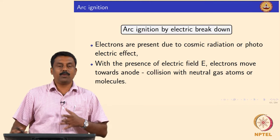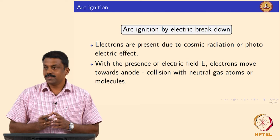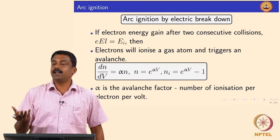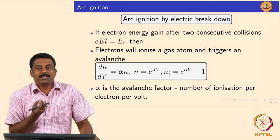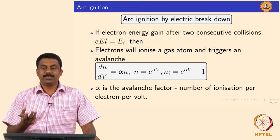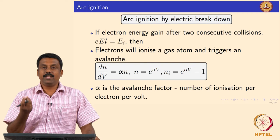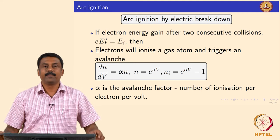Upon repeated collision with gas atoms, the moment they gain a critical energy equal to the ionization energy of the gas, they trigger ionization. The energy gained by an electron is e·E·L, where e is the charge of an electron, E is the applied electric field, and L is the electron mean free path. If this energy equals the ionization energy, the electron triggers ionization of the gas atom.